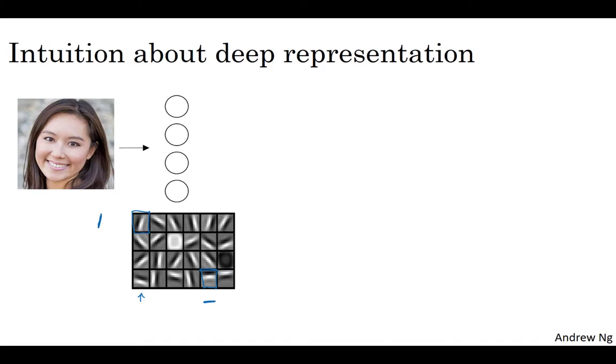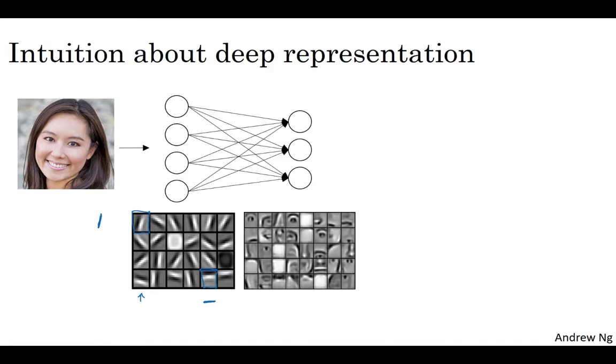But informally, you can think of the first layer of the neural network as looking at a picture and trying to figure out where are the edges in this picture. Now that it's figured out where are the edges in this picture by grouping together pixels to form edges, it can then take the detected edges and group edges together to form parts of faces.